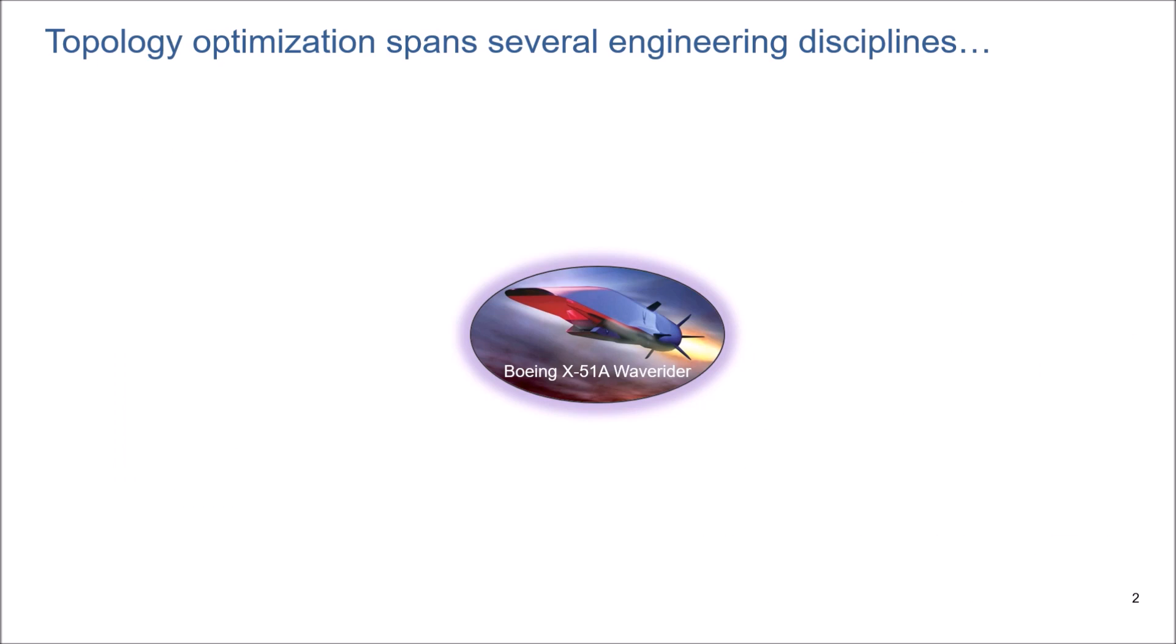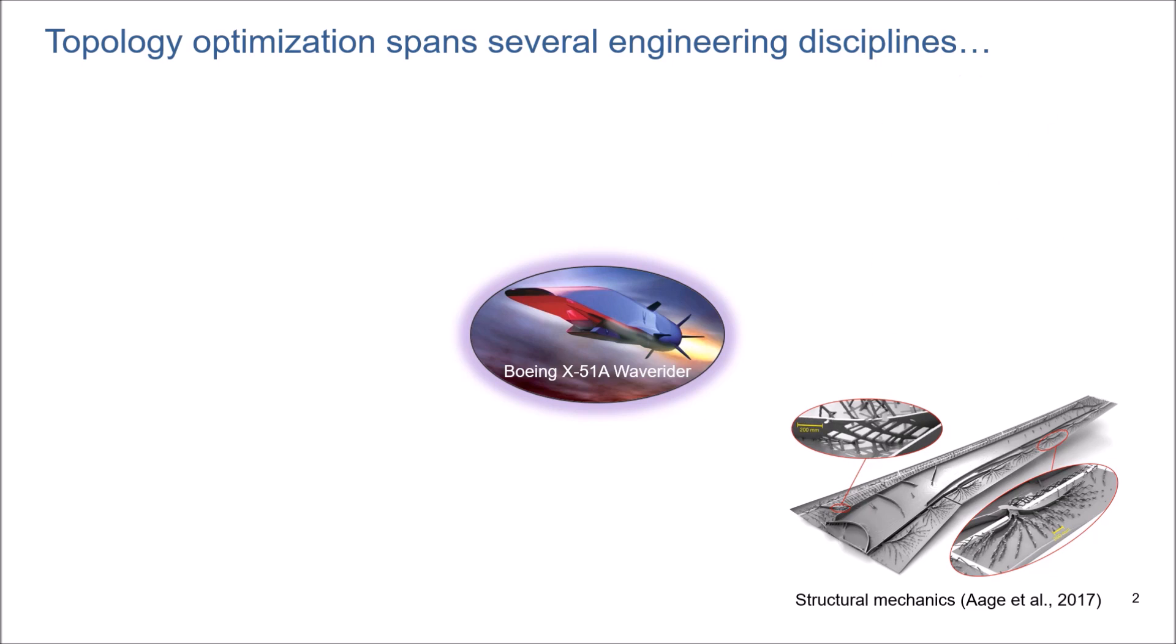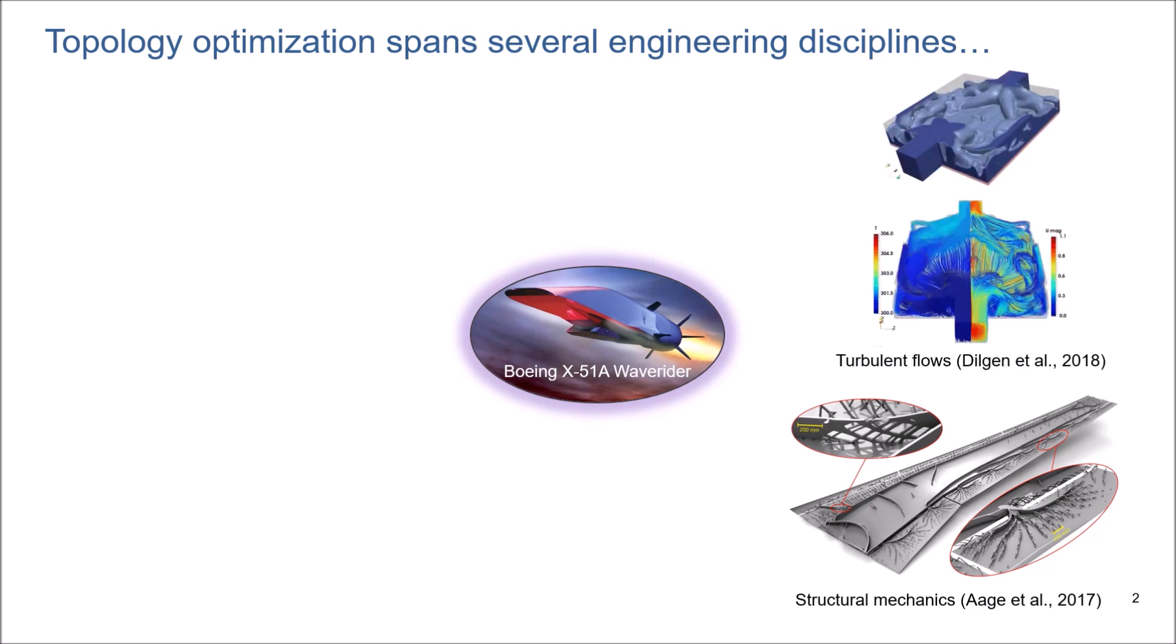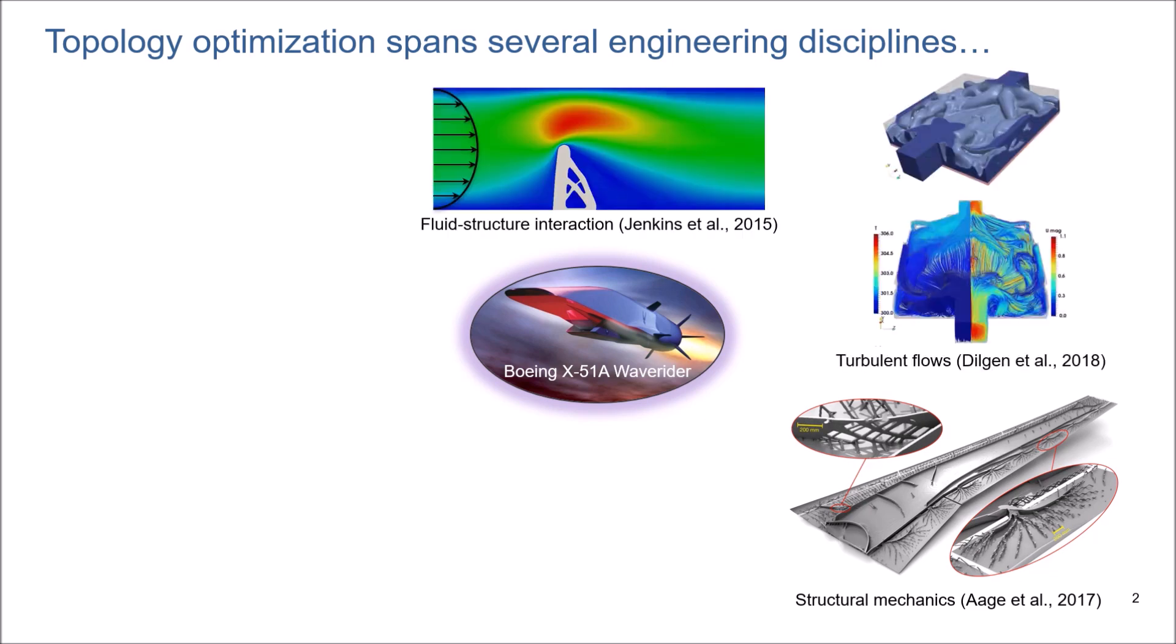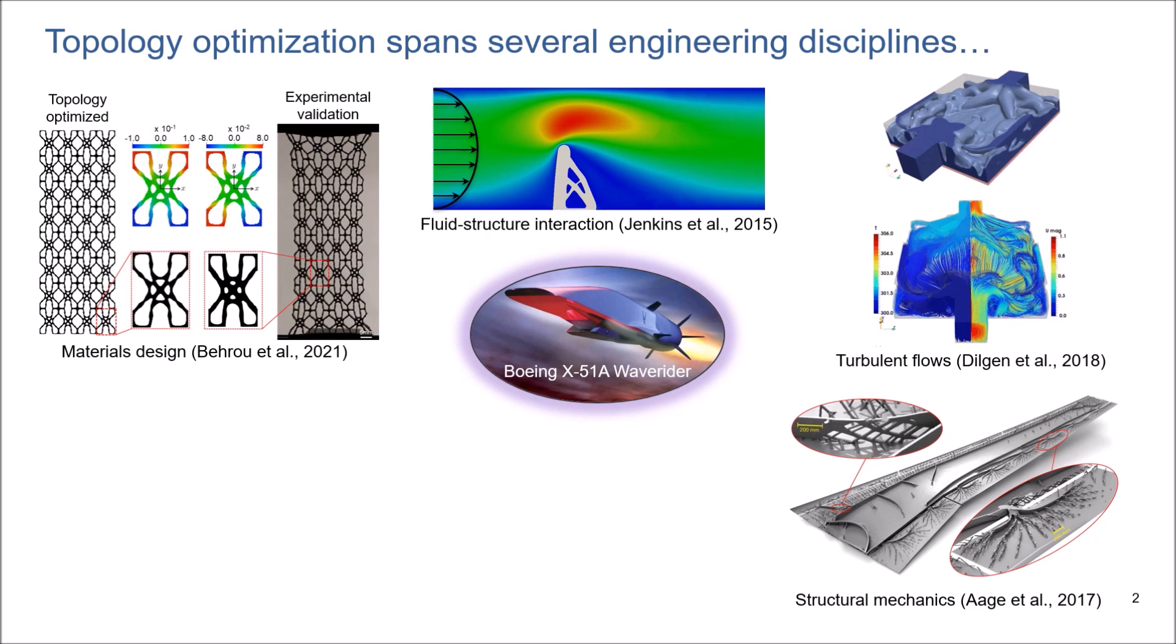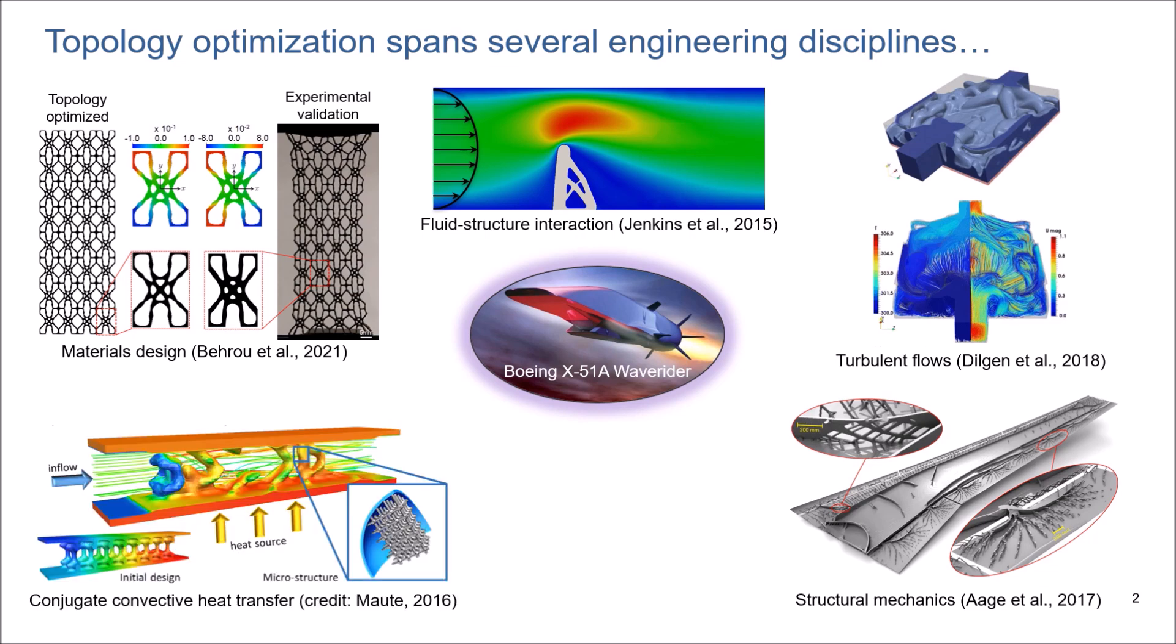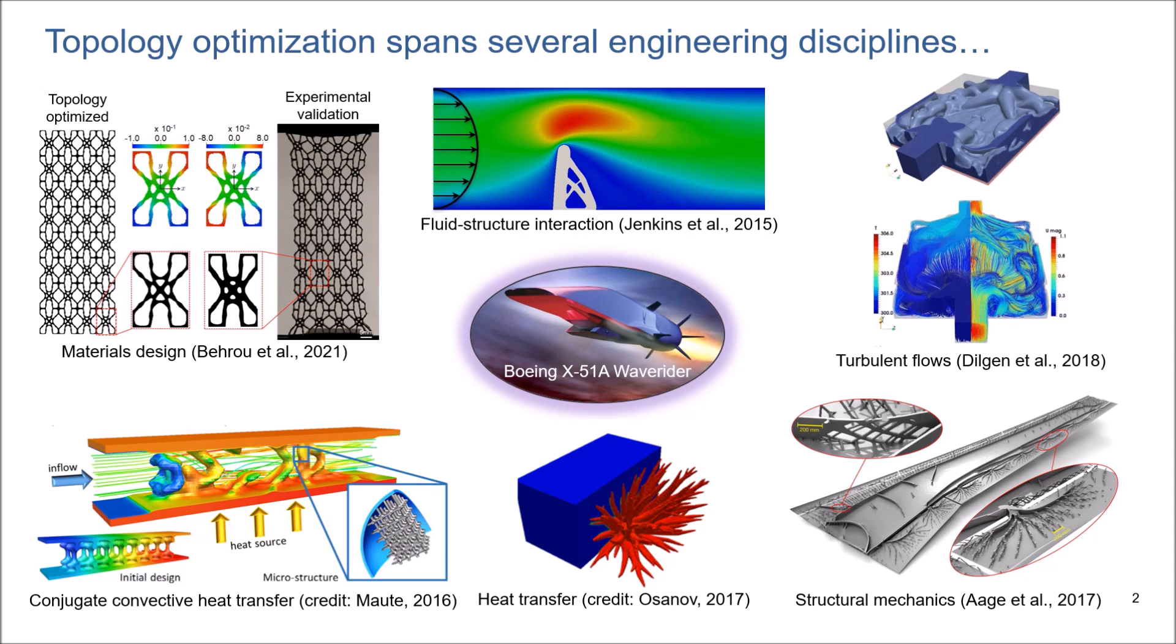We can see topology optimization recently spans other engineering disciplines. For example, let's say we have Boeing X-51 Waverider. Then, we could design all components of this complex multi-physics problem at once, or piece by piece, like the structural design of wings, flow design in turbulent regimes, design under fluid-structure interaction, design of structured materials under the user-defined constitutive model, and design for conjugate convective heat transfer or heat transfer.